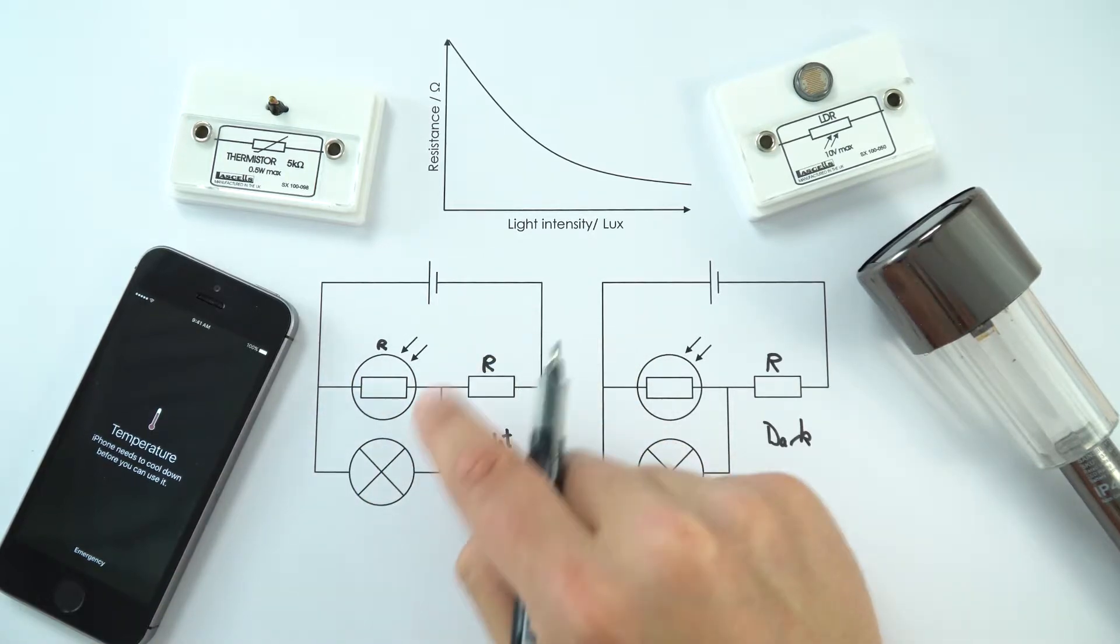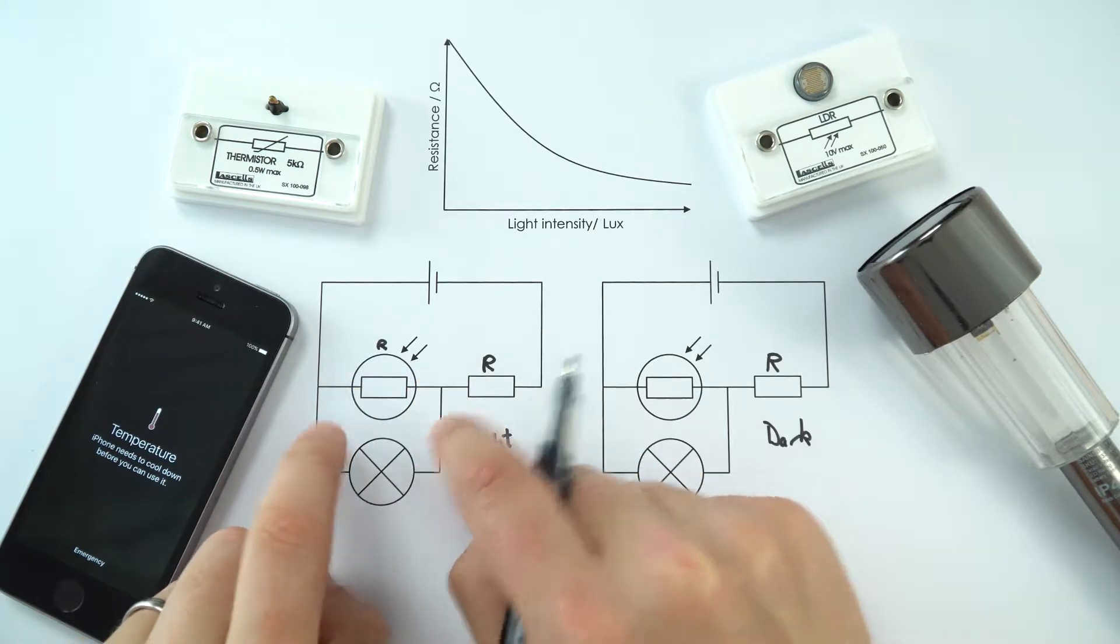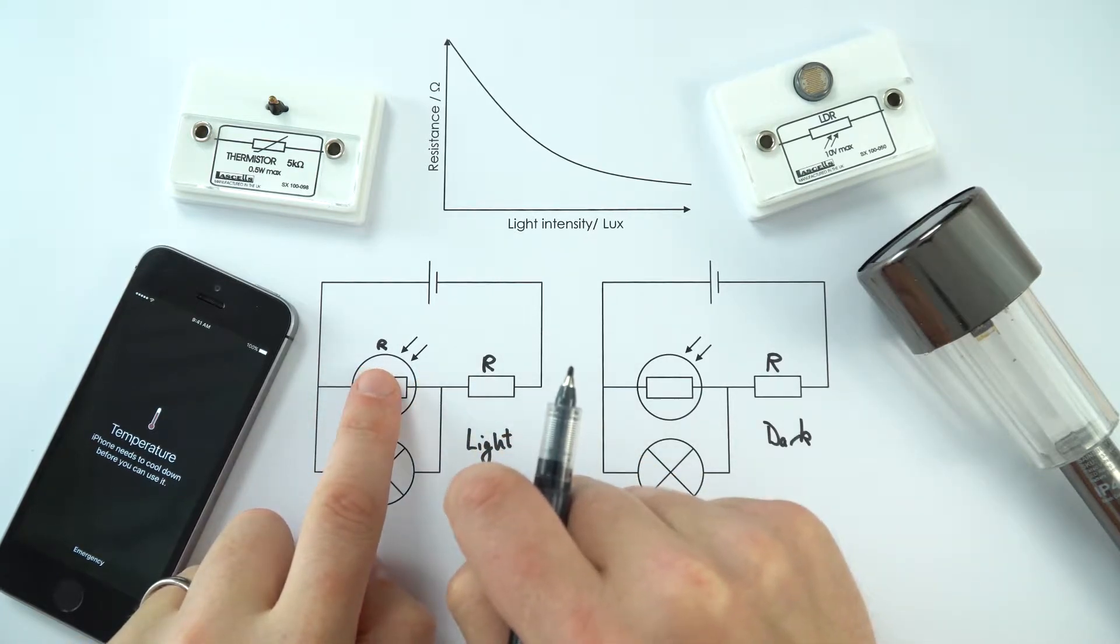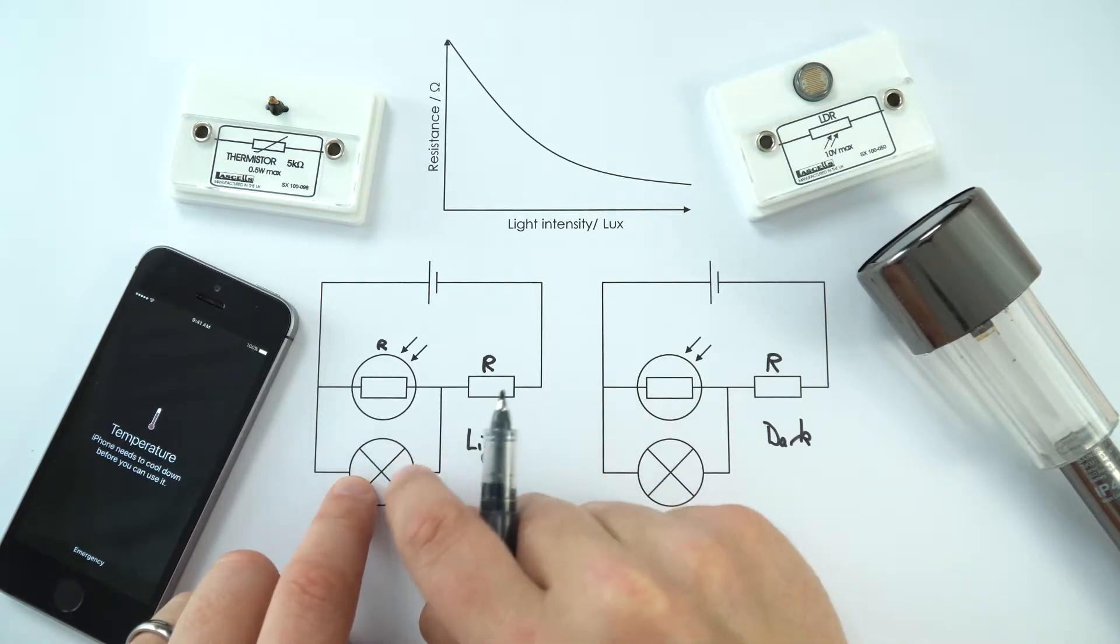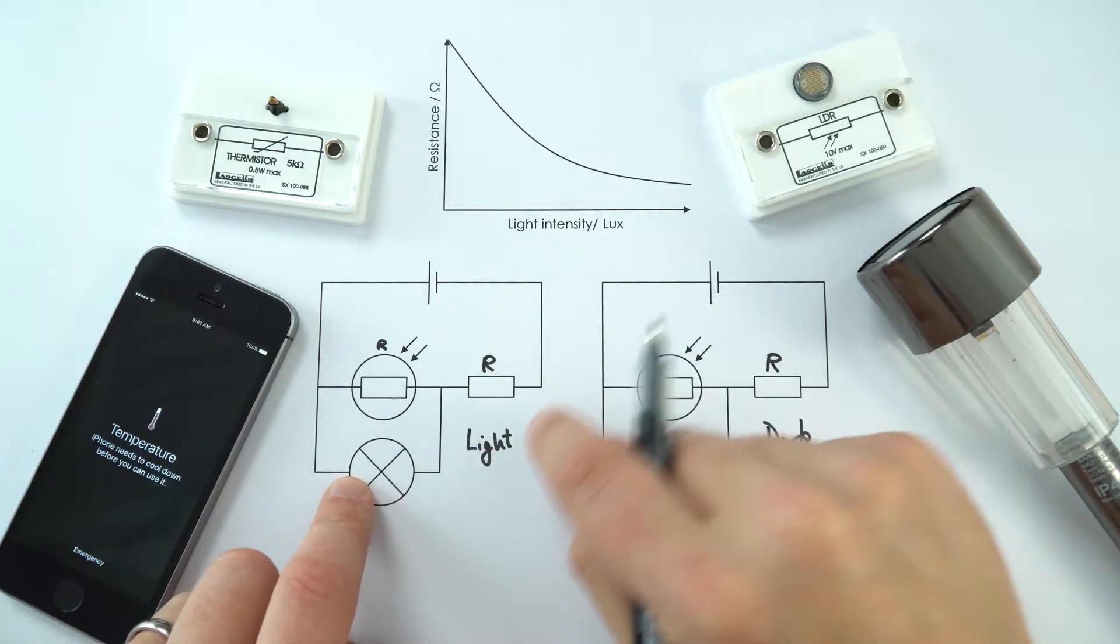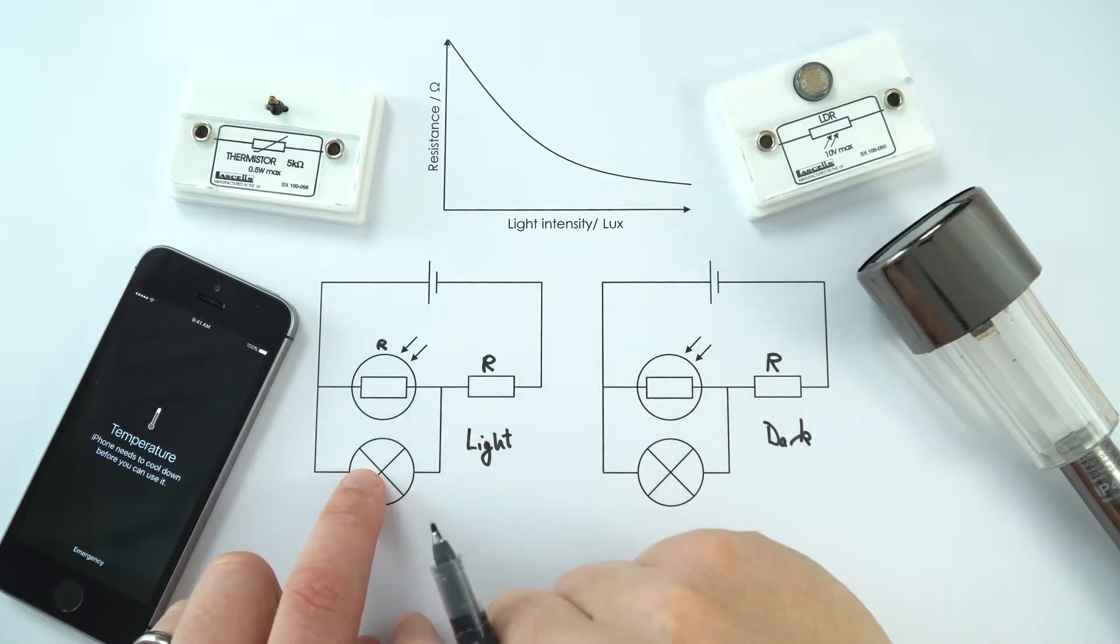Now again, what we know is that in a parallel circuit we're going to have the same potential difference here as over here. So if that's got a value of 1 volt across it, this is also going to have a 1 volt across it as well. And if you've got a low voltage, that means that this isn't going to be lighting up very brightly at all. So when it's light, we have a low value of resistance for the LDR, and that means there's going to be a low potential difference across it, and therefore a low potential difference also across the lamp, and so it doesn't light up.